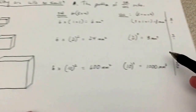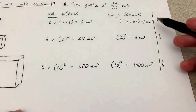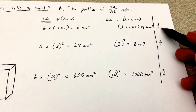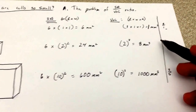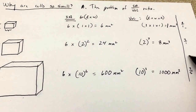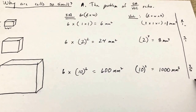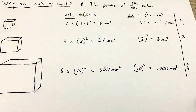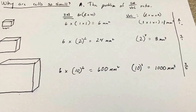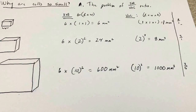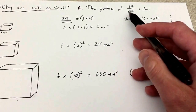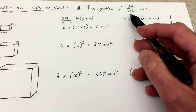Which one has the largest surface area to volume ratio? It's the smallest, at six to one. And as the cubes get larger — three to one, then three over five — even larger cubes give us smaller and smaller fractions of the surface area to volume ratio.